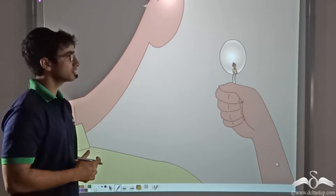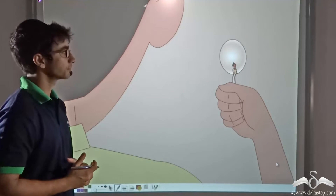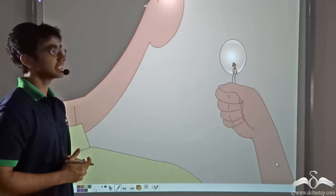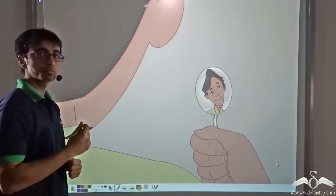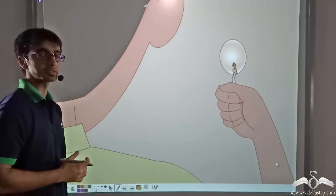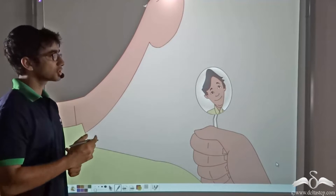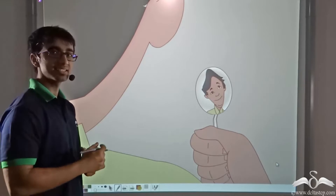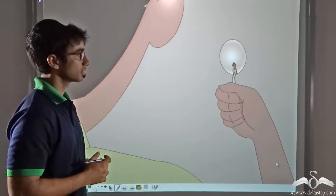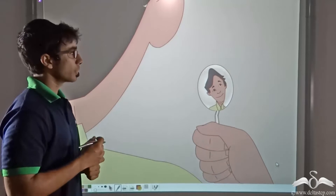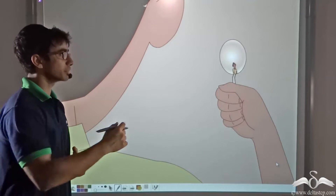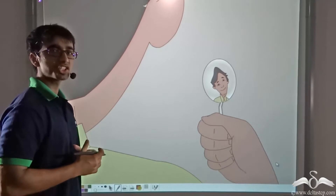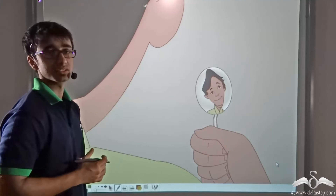Take a look at the animation on the screen. In this animation, you will find that a boy is holding up a spoon in front of him. Now when he is holding the spoon close to him, he can see his image on the spoon. Now when he is moving the spoon away from him, you will notice that the size and shape of the image is changing.